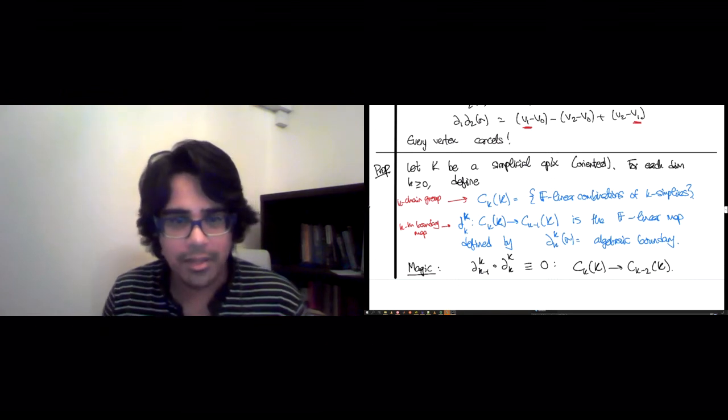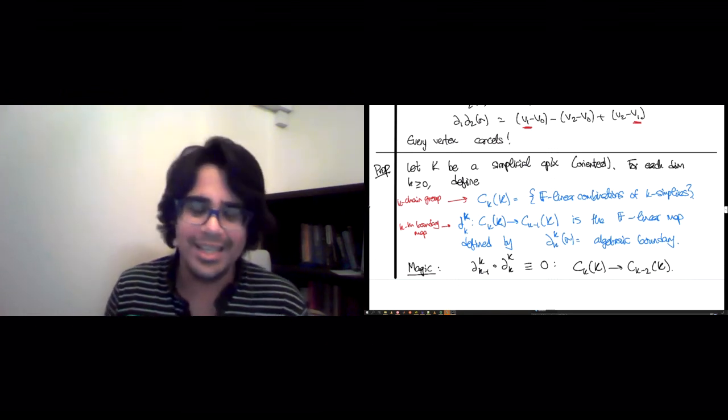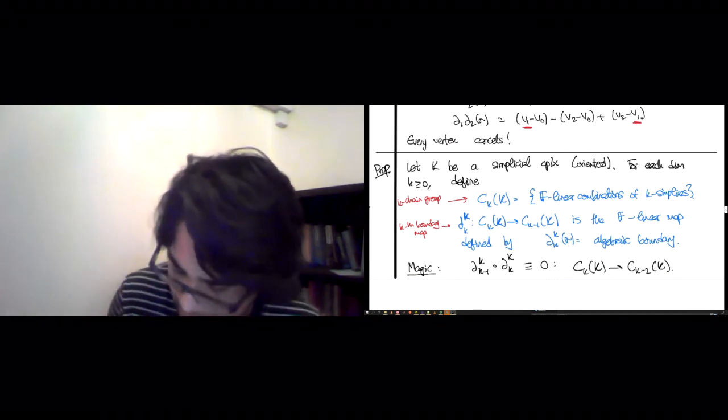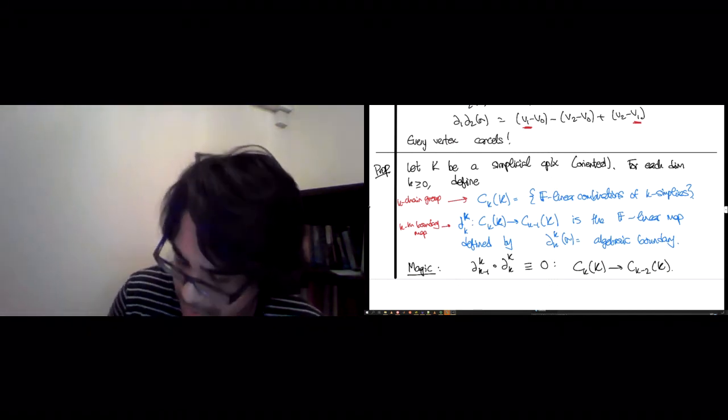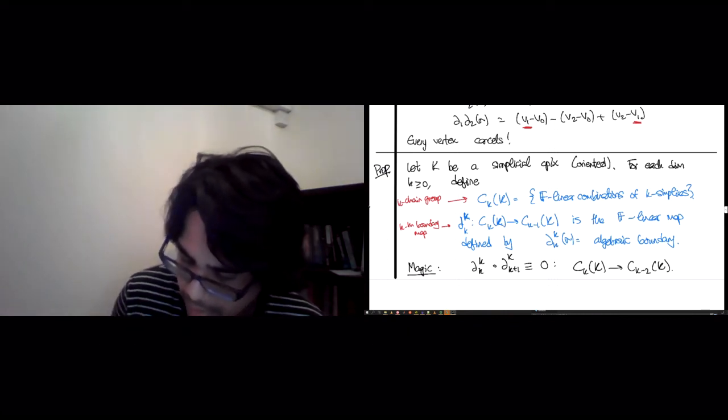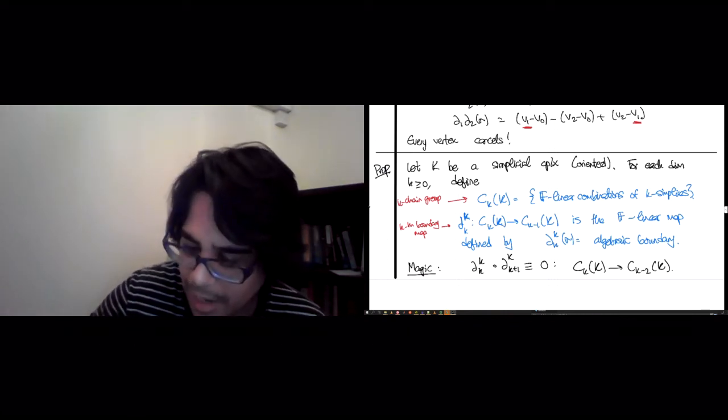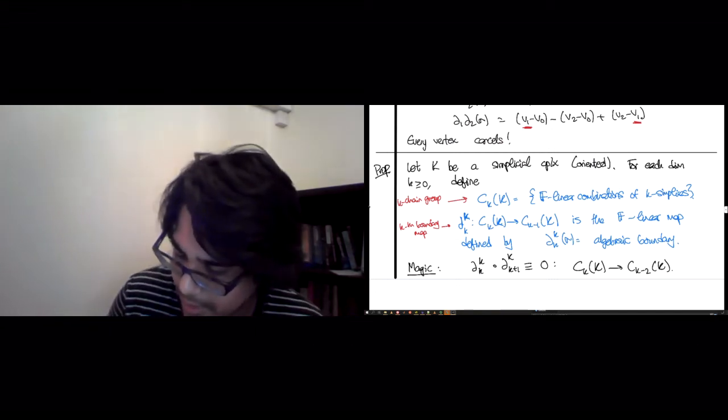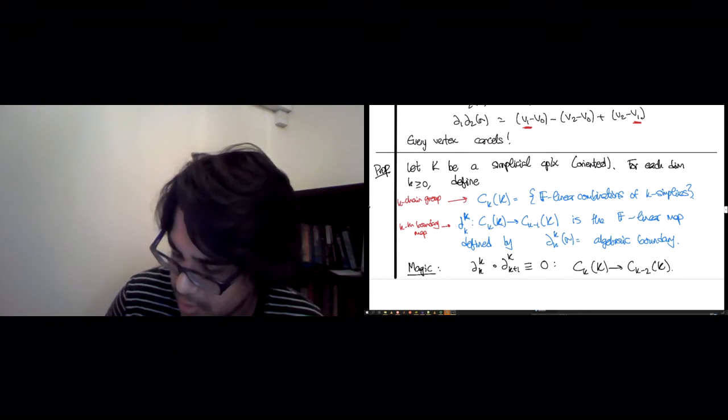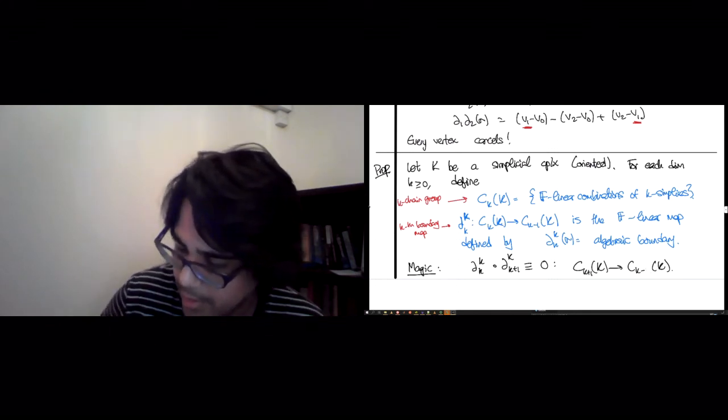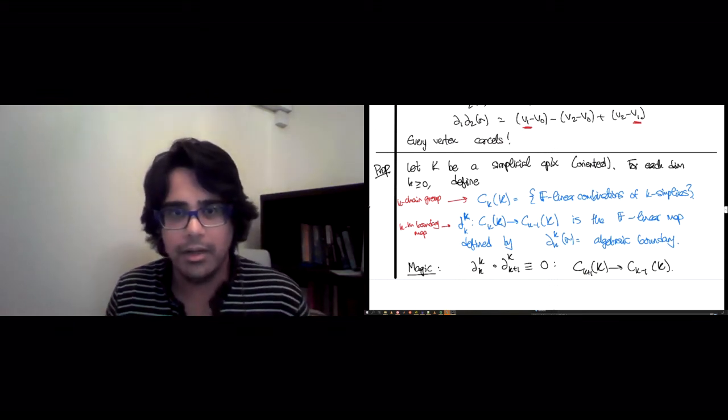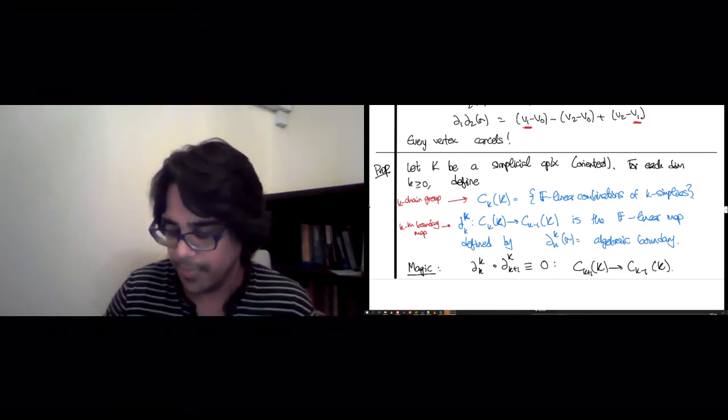Now this k to k minus 2 might start bothering you. It does bother me a little bit. So what we're going to do is make it nice and symmetric around k. So this can be just re-indexed so that this is k plus 1. And instead of k minus 1 over there, that's k. And now what's nice is that this map is going to go instead of from k to k minus 2, it's going to go from k plus 1 to k minus 1. And that sort of makes everyone feel better about symmetry around k.